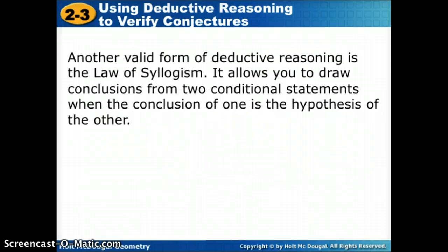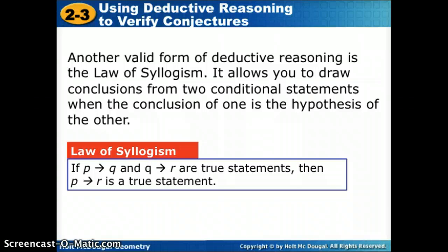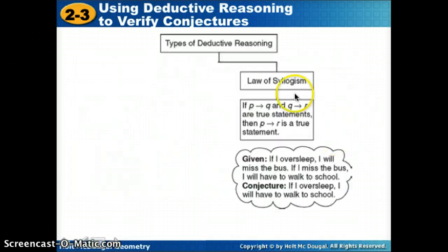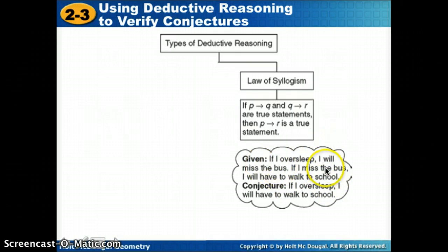Another law we can use for valid deductive reasoning is the Law of Syllogism. This allows you to draw conclusions from two conditional statements when the conclusion of one is the hypothesis of the other — very similar to the transitive property. If P then Q, and if Q then R, then we can conclude if P then R. For example: if I oversleep, I will miss the bus. If I miss the bus, I will have to walk to school. Conjecture: if I oversleep, then I will have to walk to school. That's valid by law of syllogism.